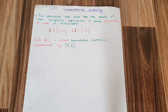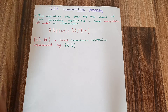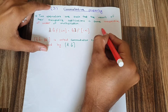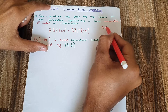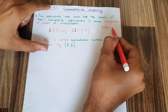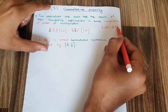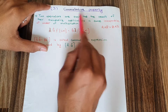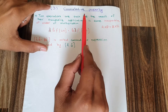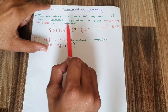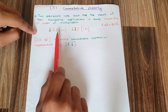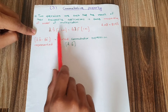Our next property is the commutative property. In the commutative property, the order of multiplication is independent. For example, if I multiply A with B, the answer of A×B should be equal to the answer of B×A. Applying this commutative property to operators, the order of application of the operator is independent, so we say these operators are commutative operators.